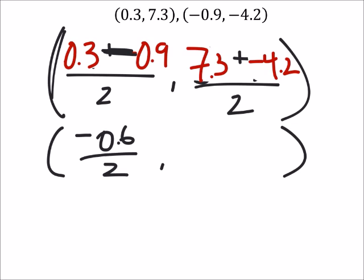And then 7.3, that's going to be a minus again. Minus 4.2 is 3.1 over 2.